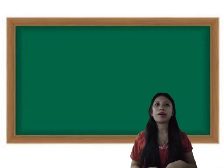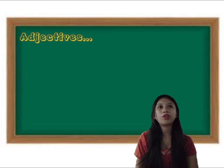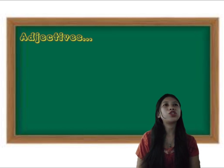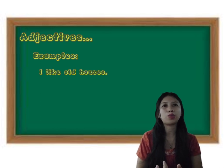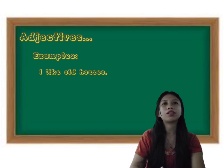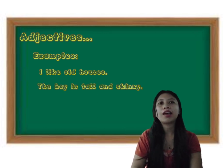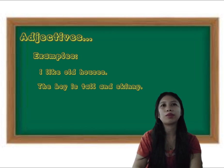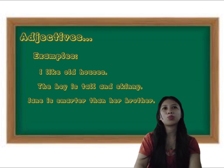Let's move on to the next and last topic, which is adjective. So what is adjective? An adjective is a word that modifies or describes a noun or pronoun. Adjectives can be used to describe the qualities of someone or something independently or in comparison to something else. The example for this is: "I like old houses." The adjective here is old, which describes houses. The second example is: "The boy is tall and skinny." The adjectives are tall and skinny, which describe the boy. The next example is: "Jane is smarter than her brother." The adjective is smarter, which describes Jane in comparison to her brother.